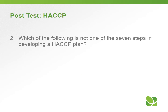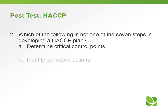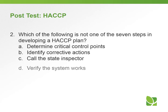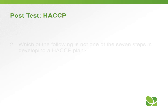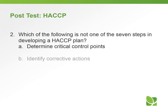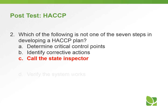Question 2: Which of the following is not one of the 7 steps in developing a HACCP plan? A. Determine Critical Control Points; B. Identify Corrective Actions; C. Call the State Inspector; D. Verify the System Works. The answer is C — Call the State Inspector. Determining critical control points, identifying corrective action, and verifying the system works are all part of the HACCP plan.